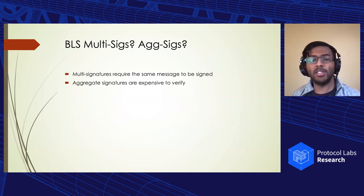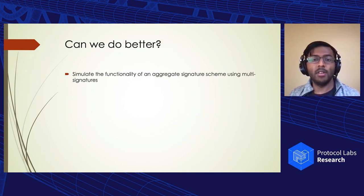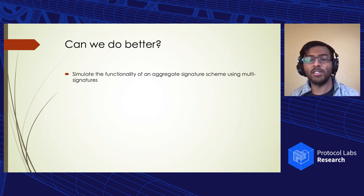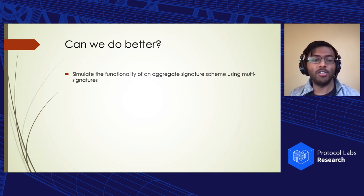There are unfortunately some obstacles we run into. See, multi-signatures require the same message to be signed, which we don't have in this case. And aggregate signatures work, but they're expensive. They're expensive since they require a linear number of pairings for verification. So can we actually do better? The answer is yes. To do so, we're going to try to simulate the functionality of an aggregate signature scheme, which works on signatures for different messages, but use multi-signatures under the hood for increased efficiency.